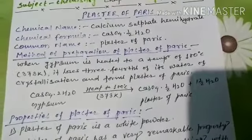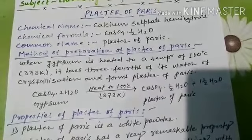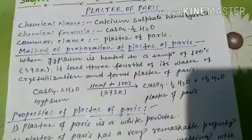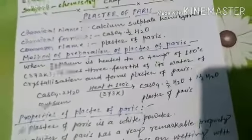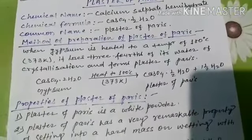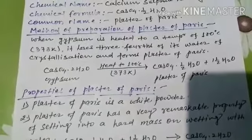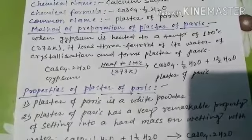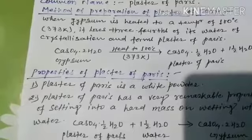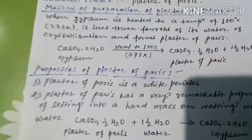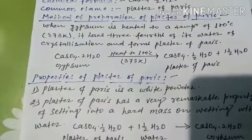Now, method of preparation of Plaster of Paris. When gypsum is heated to a temperature of 100 degree Celsius or 373 Kelvin, it loses three-fourths of its water of crystallization and forms Plaster of Paris. The chemical formula of gypsum is CaSO4·2H2O, and the chemical formula of Plaster of Paris is CaSO4·½H2O.